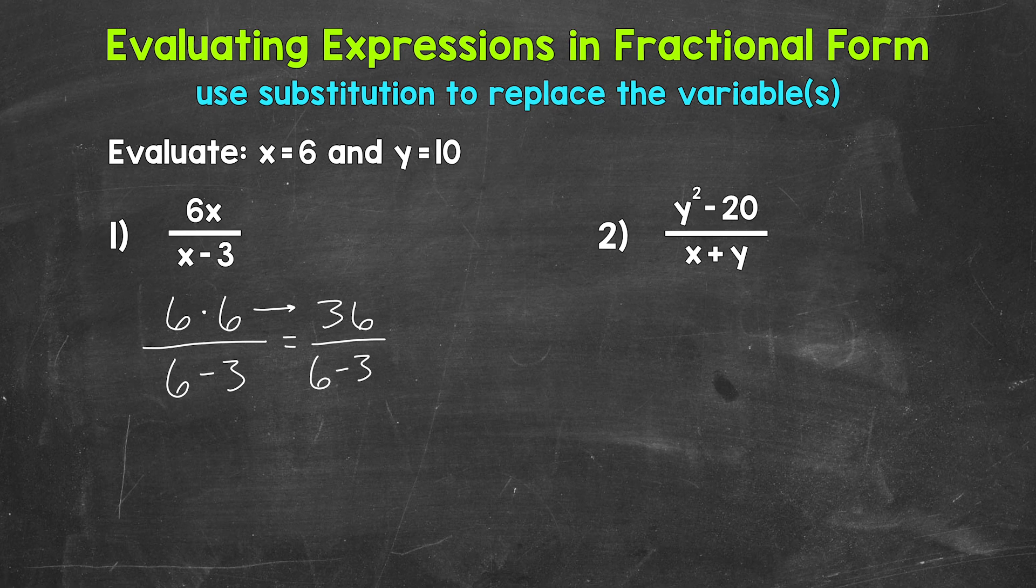Now we can work through the bottom. So this is going to equal 36 over, well, 6 minus 3 equals 3. So we have 36 over 3, 36 divided by 3. That equals 12. So the value of this expression is 12 when x equals 6.